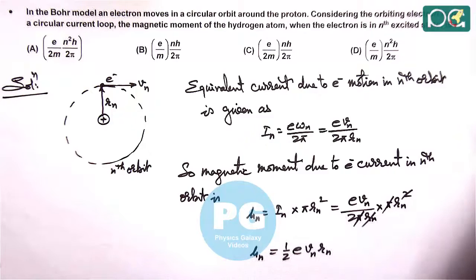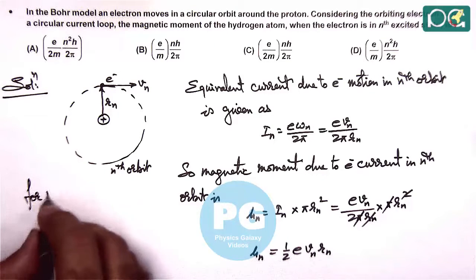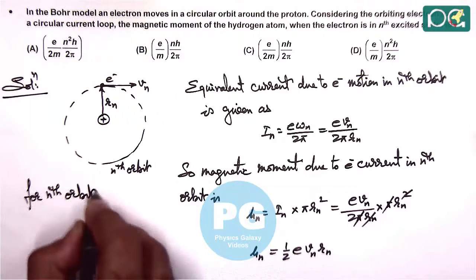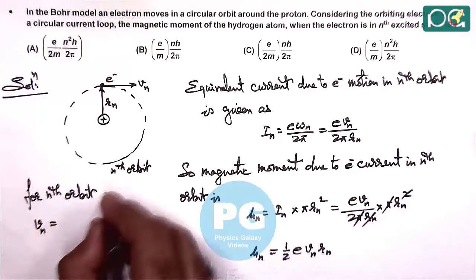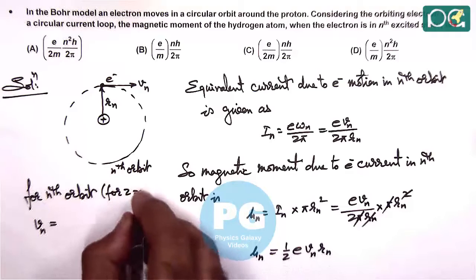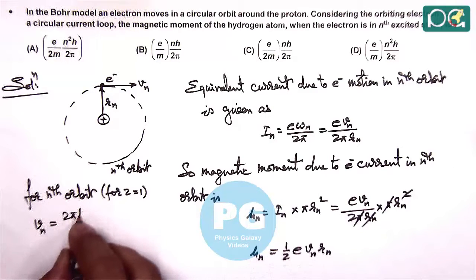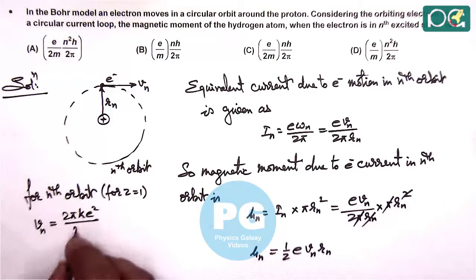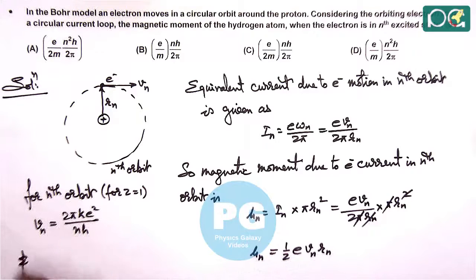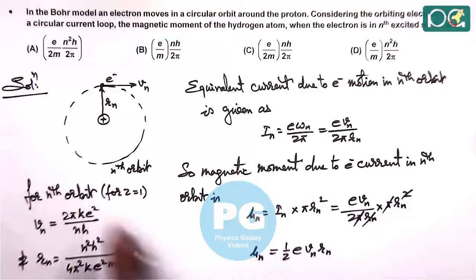So let us first substitute the value of vn and rn in terms of n, because the values we already calculated. Here we can write for nth orbit, vn we can write as 2π k e square by nh, and rn we write n square h square by 4π square k e square m. These values we substitute.